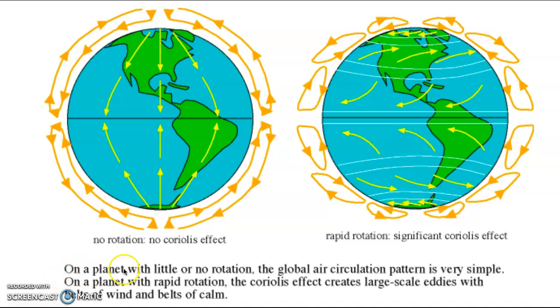On a planet with little or no rotation, the global air circulation pattern is very simple. On a planet with rapid rotation, the Coriolis effect creates large scale eddies with belts of wind and belts of calm. This large scale pattern is very important because it impacts severe weather, for example hurricanes, typhoons, and other very serious damaging weather.